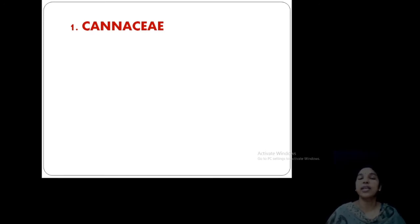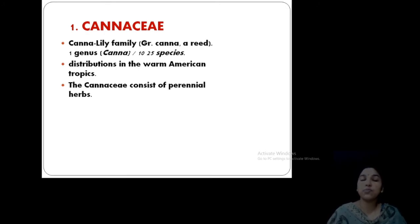We can start our Scitamineae families. The first one is Cannaceae. Cannaceae is a very common plant in our areas. This family is known as Canna lily family. Canna lily is the common thottavadi in Malayalam. It has a single genus, that is Canna, and about thousands of species are occurring all over the world. Its distribution is in warm American tropics and most of them are perennial herbs.